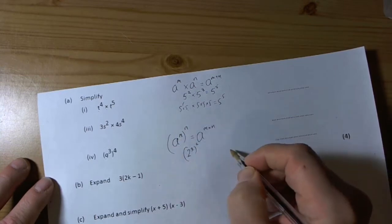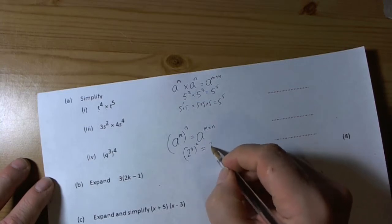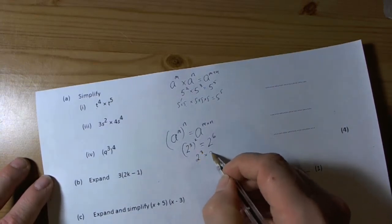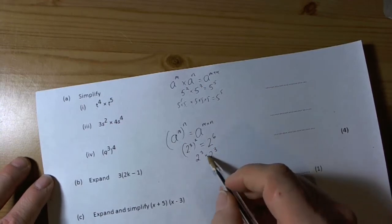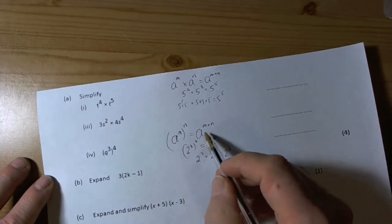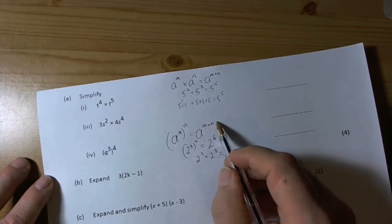Simple example: if I had 2 cubed that was squared, then the answer would be 2 to the power of 6. The reason it works is 2 cubed squared means 2 cubed times 2 cubed. And because we have the rule up here, then we can add the powers 2 to the power of 6. So the quick way of doing it is multiply the two powers.